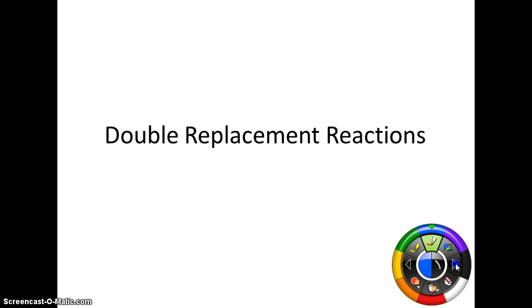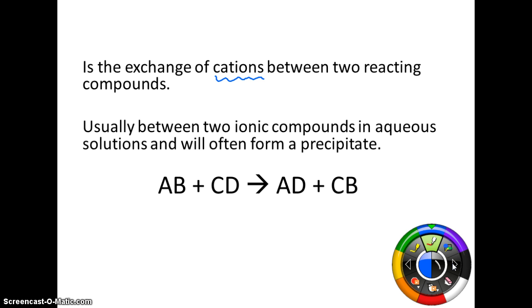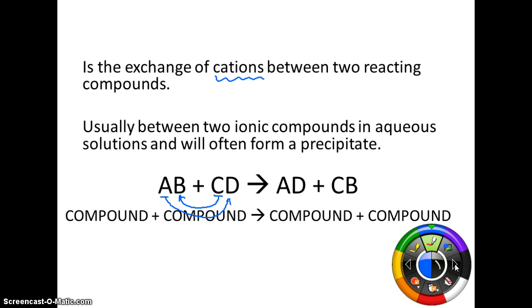Now double replacement reactions. A double replacement reaction is the exchange of cations — cations are first in a formula, so we're going to be exchanging those two things. It's usually between two ionic compounds in an aqueous solution (that means in water), and it will often form a precipitate, which is an insoluble solid. So AB plus CD yields AD plus CB: A bonds to D, C bonds to B, and A and C traded places. It's going to be a compound plus a compound yielding a compound plus a compound.